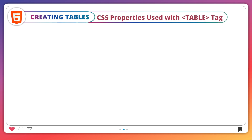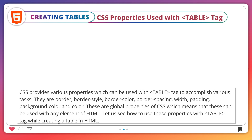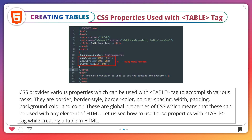CSS properties used with the table tag. CSS provides various properties which can be used with the table tag to accomplish various tasks. They are: border, border-style, border-color, border-spacing, width, padding, background-color, and color. These are global properties of CSS, which means they can be used with any element of HTML.